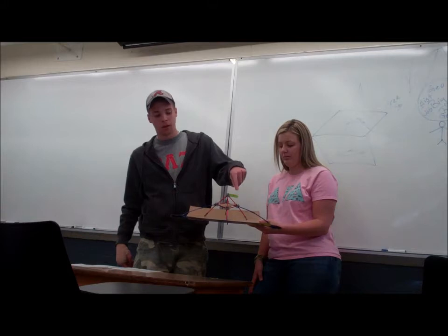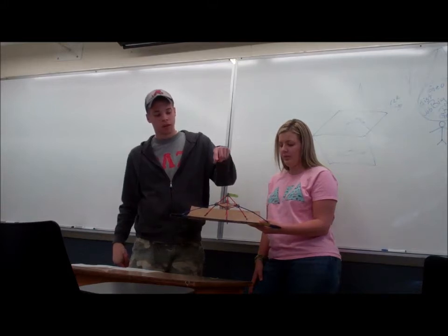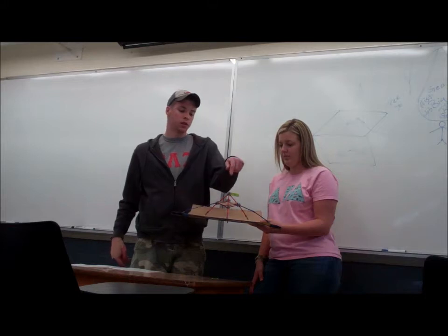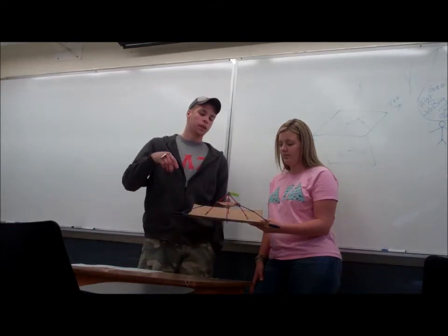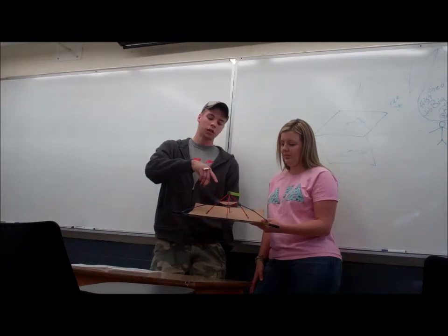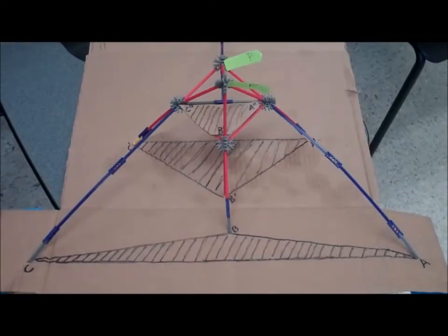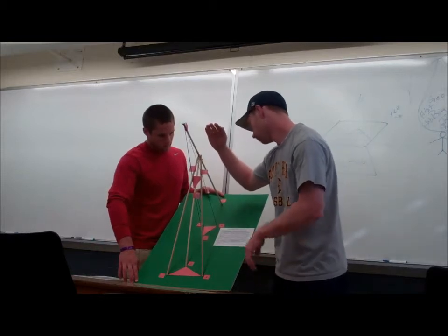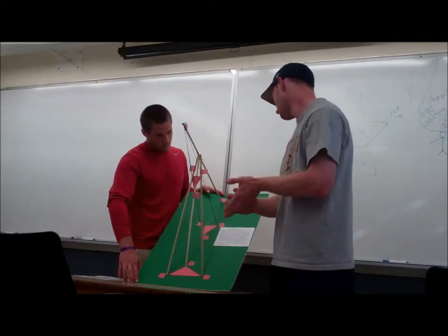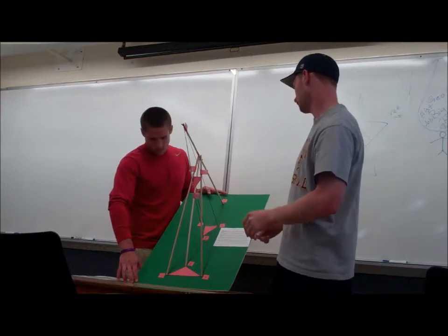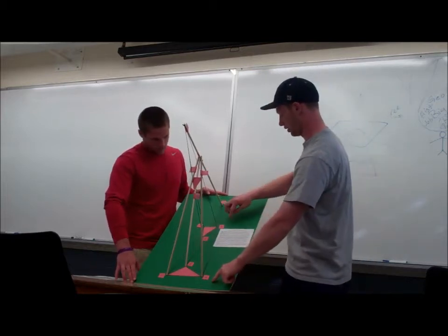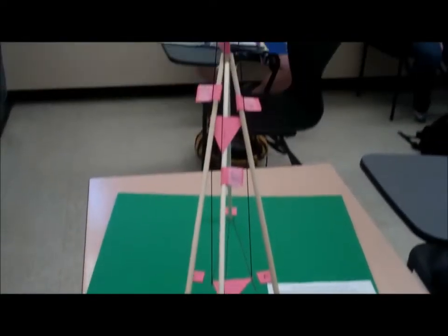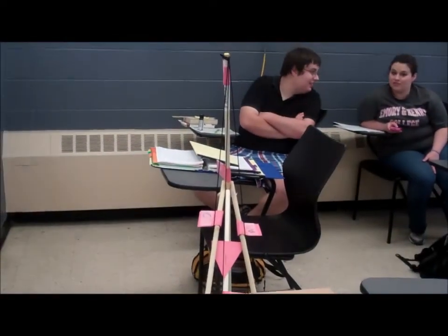We can prove it by saying: suppose triangle ABC is in plane pi and triangle A'B'C' is in plane pi prime. Let L be the line of intersection of pi and pi prime. Since AA' and BB' meet at O, AB and A'B' meet at a point called P. Thus, P lies in pi since P is on AB. P also lies on pi prime because P is also on A'B'. Thus, P is on L.